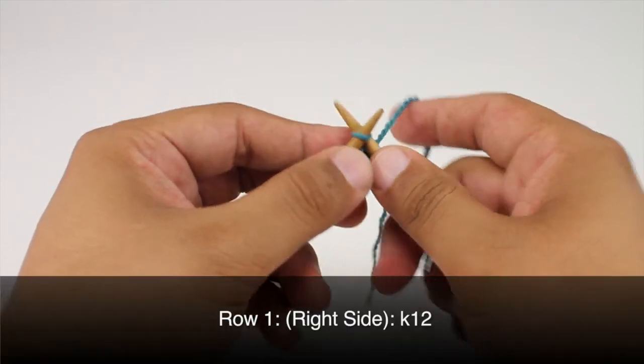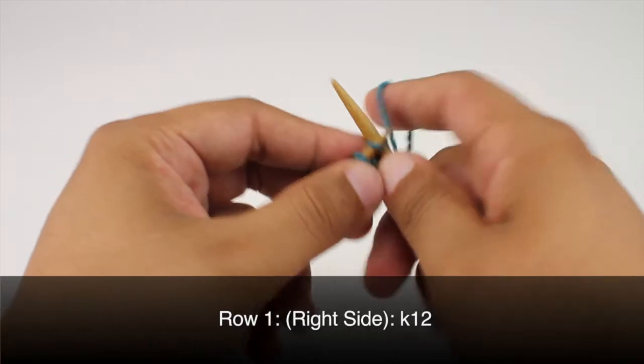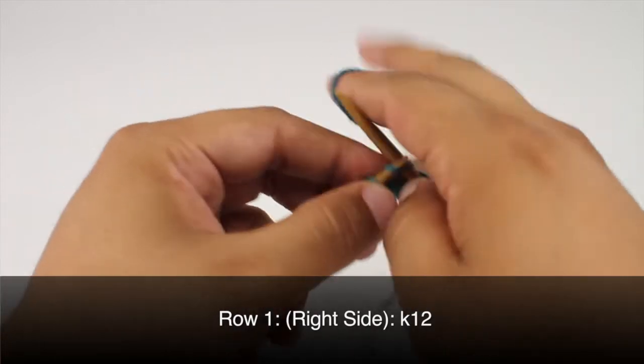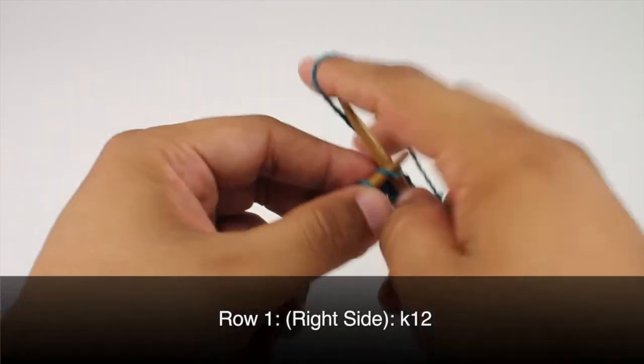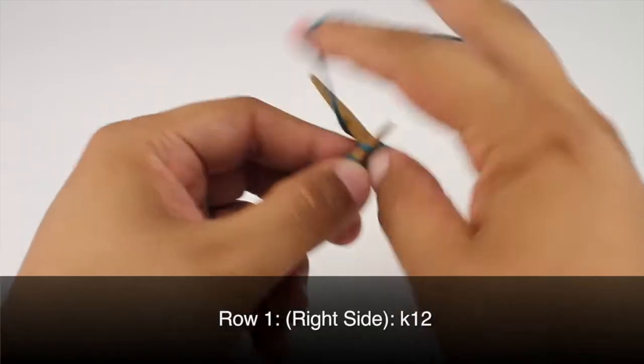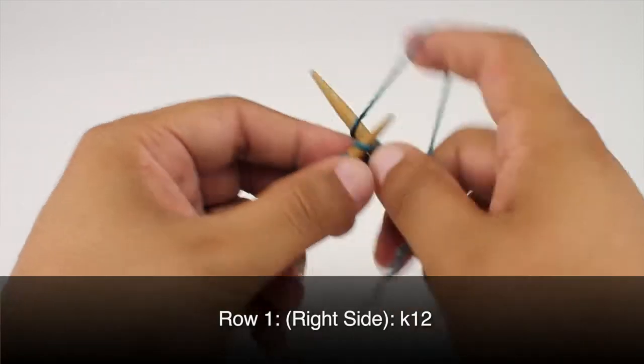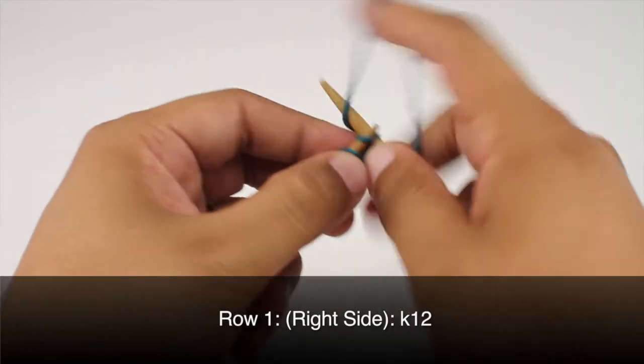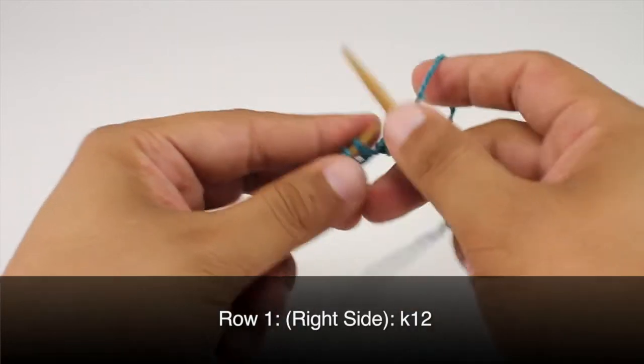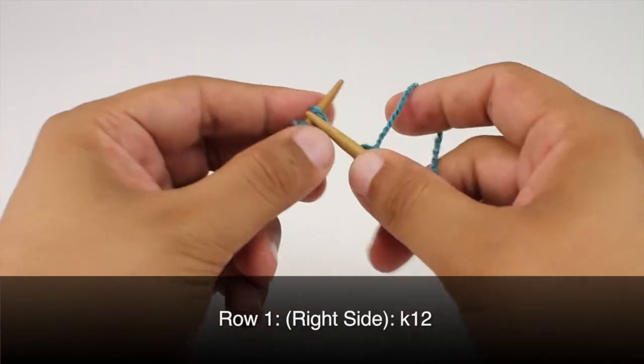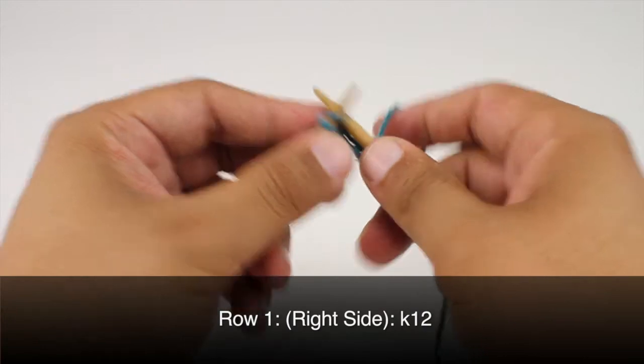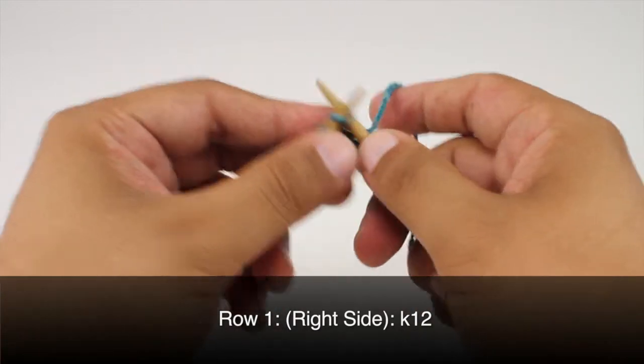Row one. Beginning on the right side of our work we're going to knit 12. There's six, nine, and twelve.